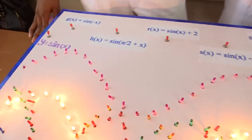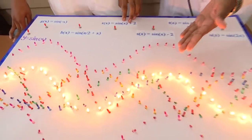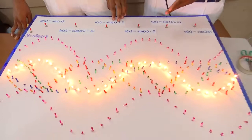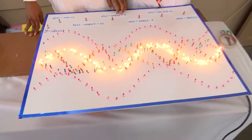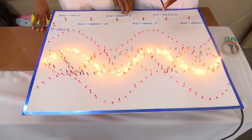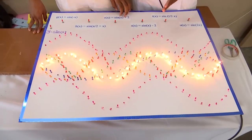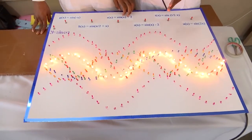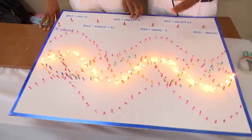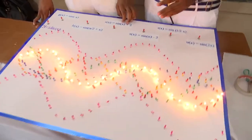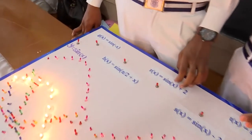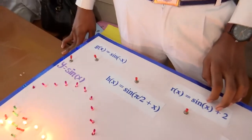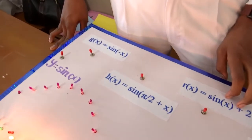Usually by seeing the basic graph we can draw other complicated graphs by using the concepts of reflection, translation, and dilation. In translation and reflection, the shape and size of the graph will not be changed, but in dilation the graph will be changed, and the content will be explained in detail.